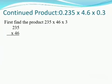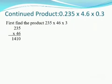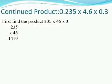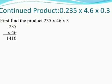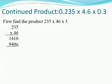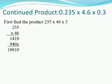So multiply 235 by 6; we get 1410. Now multiply 235 by the tens digit, that is 4; we get 940 followed by a cross on the extreme right. Now add these numbers; we get 10,810 as their product.